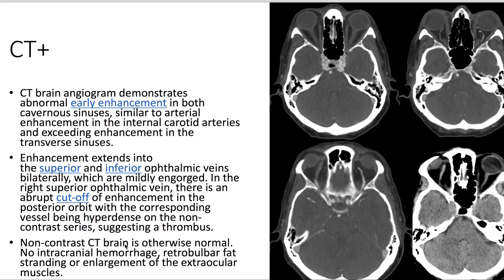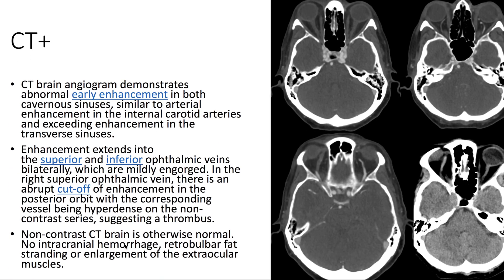On CT with contrast, we see that there's abnormal early enhancement in the bilateral cavernous sinuses. The enhancement extends here to the inferior ophthalmic vein, as well as to the bilateral superior ophthalmic vein.